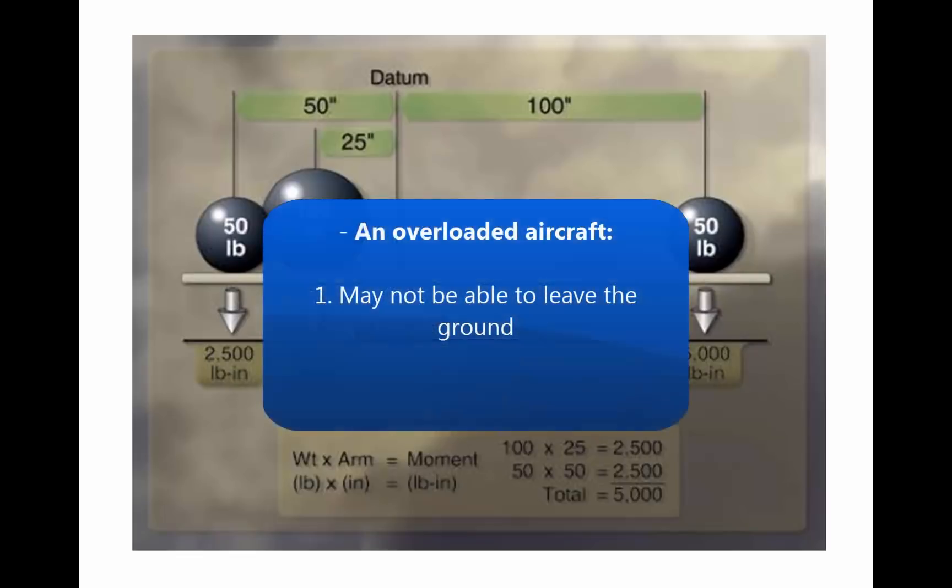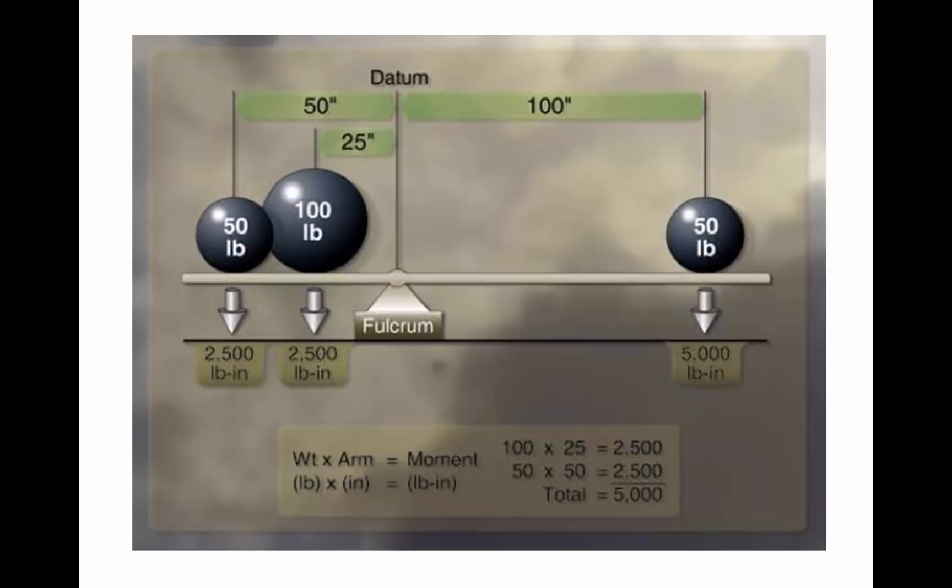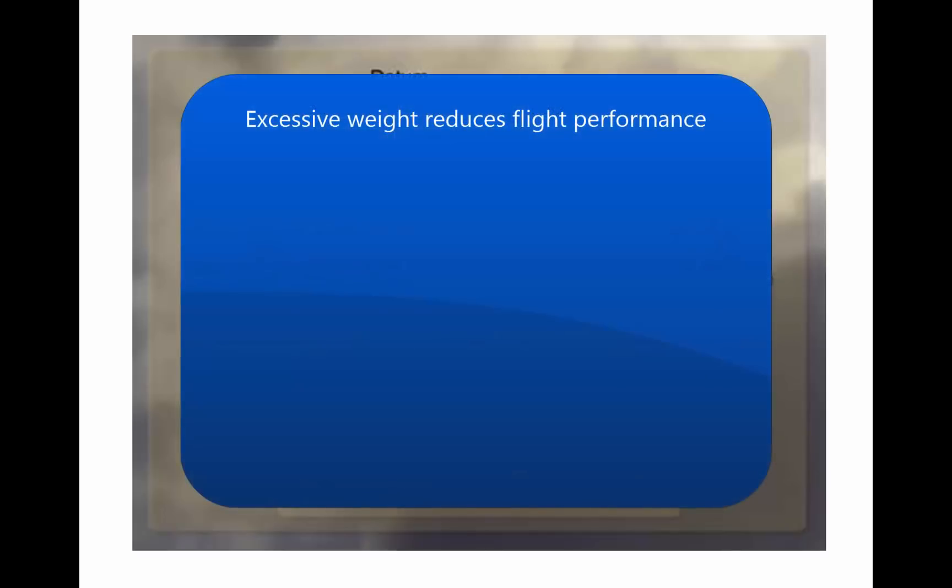An overloaded aircraft may not be able to leave the ground, or if it does become airborne, it may exhibit unexpected and unusually poor flight characteristics. If not properly loaded, the initial indication of poor performance usually takes place during takeoff. Excessive weight reduces the flight performance in almost every respect.